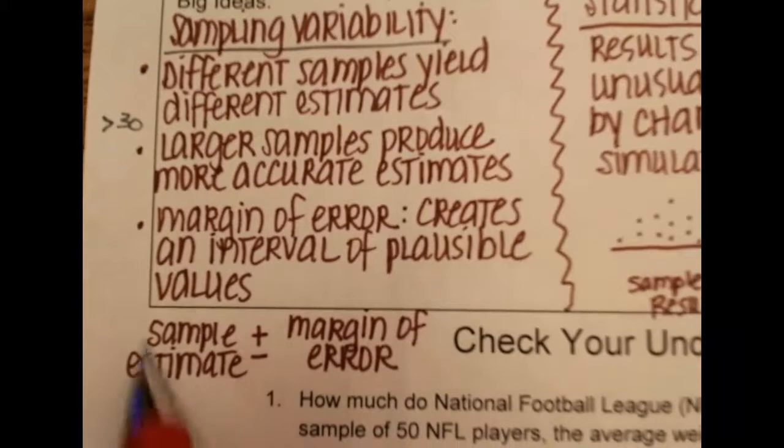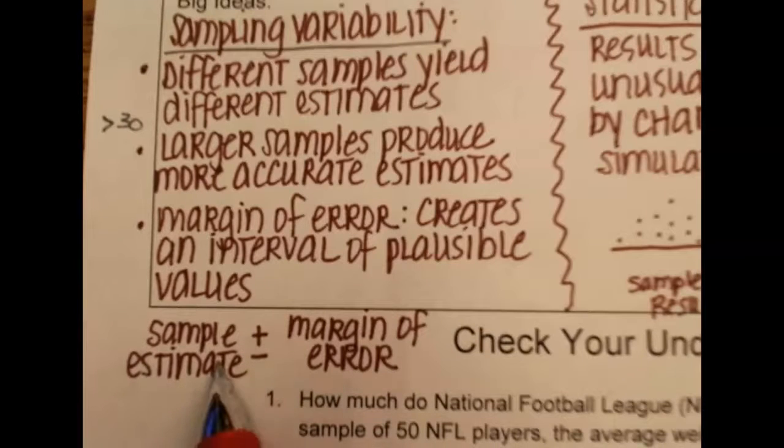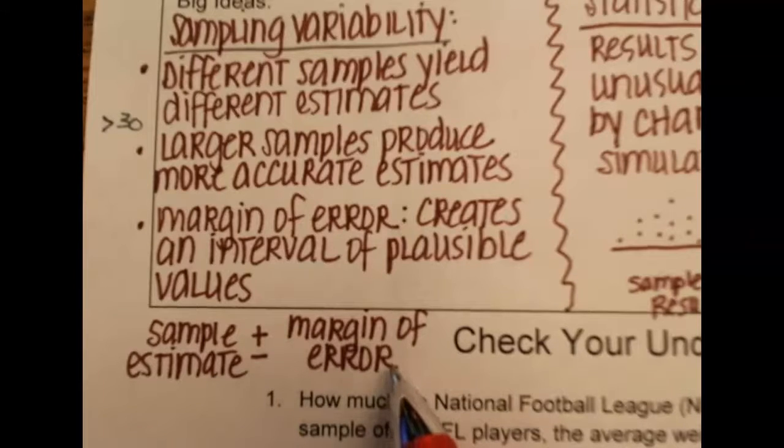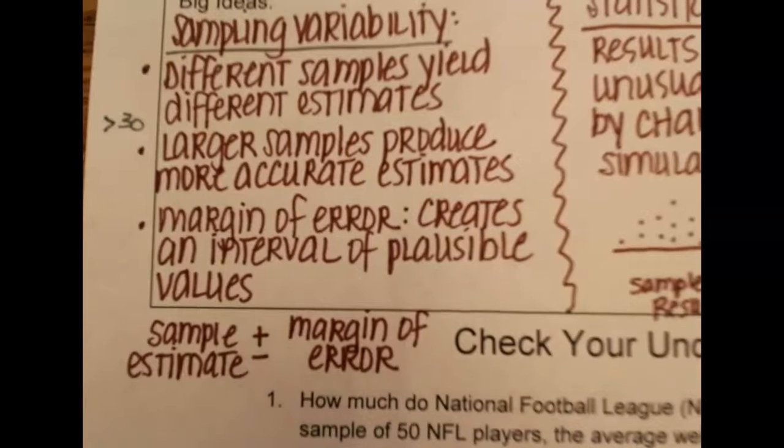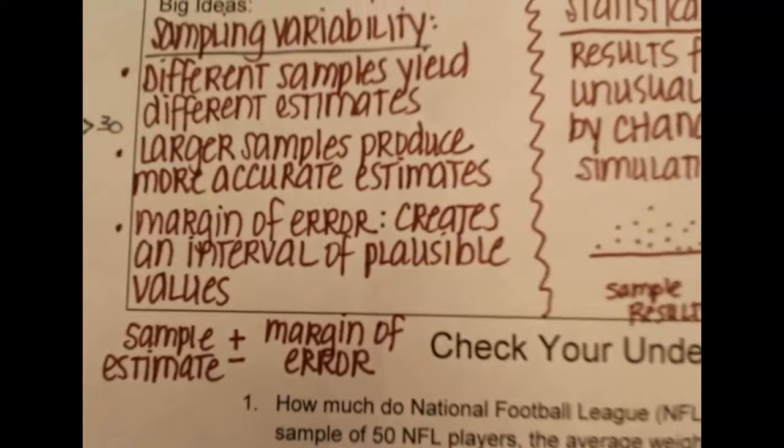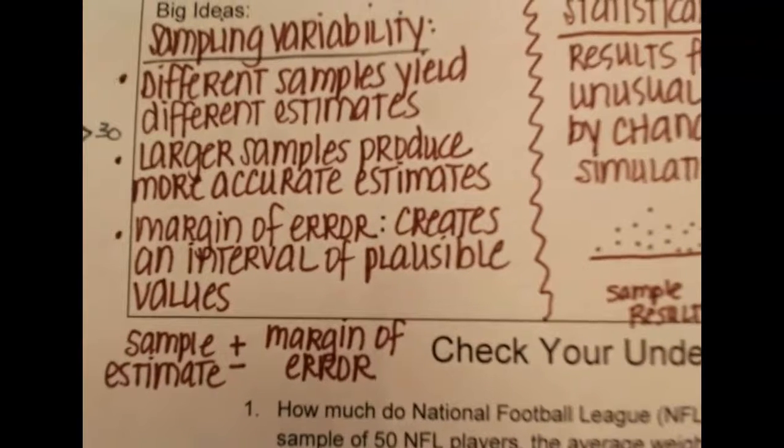And so a margin of error would be, if you took whatever your sample estimate is, so ours is negative 1.1, and then there's a way to calculate a margin of error in there. So you get a range of plausible values that the population could be if we repeated our simulation or study.